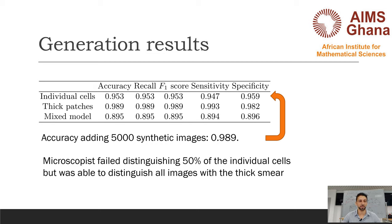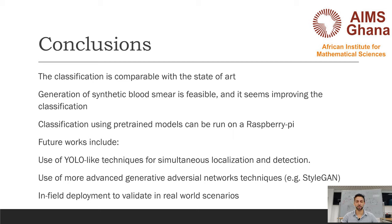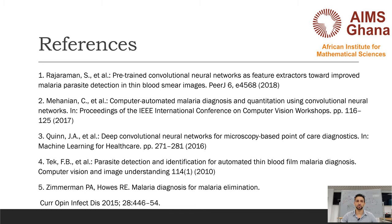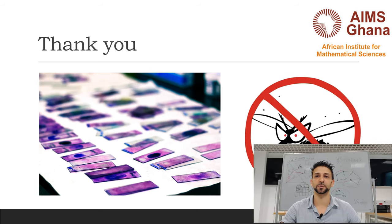In conclusion, our results are comparable to the state of the art; with simple generative models we can obtain fairly realistic images, and the classification procedure can run on an inexpensive device like a Raspberry Pi. Future work includes continuous localization and detection of red cells, and using more advanced generative models like StyleGAN 2 to produce even more realistic images. We also need to validate this approach in real-world settings. Thank you for your attention — let's continue our effort to combat malaria.